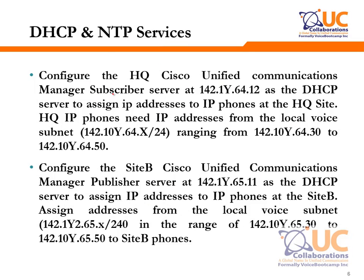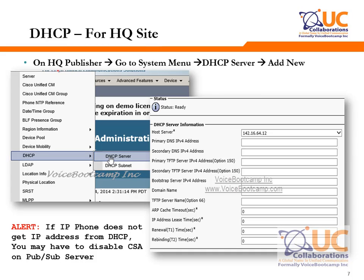The next section is configuring DHCP and NTP. You are required to configure the subscriber as a DHCP server, with address 142.1Y.64.12, assigning IP addresses for HQ phones in the range of 30 to 50. For Site B, you will configure the Site B Call Manager as a DHCP server for Site B phones, also in the range 30 to 50. On the Call Manager side at HQ, go to Publisher, select the System menu, select DHCP Server, and add a new entry — selecting the subscriber server as the DHCP server address.